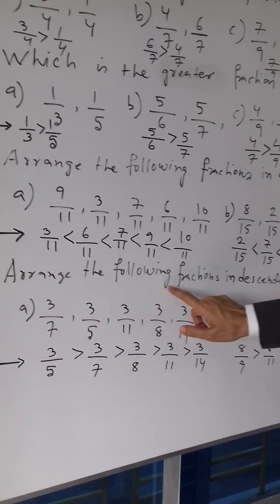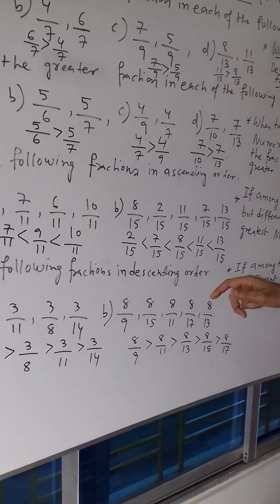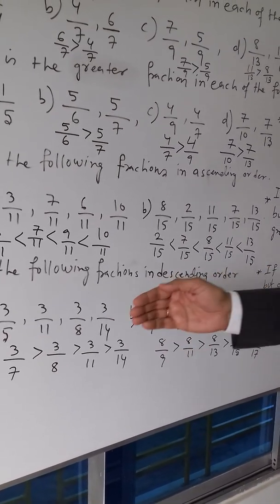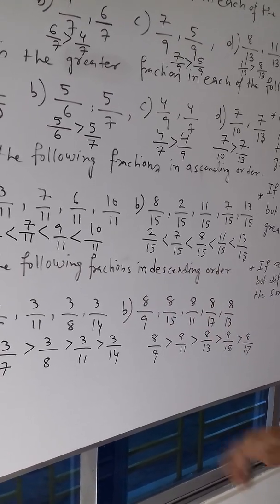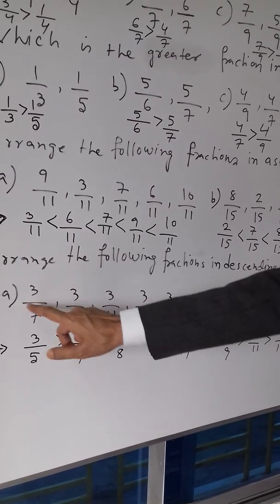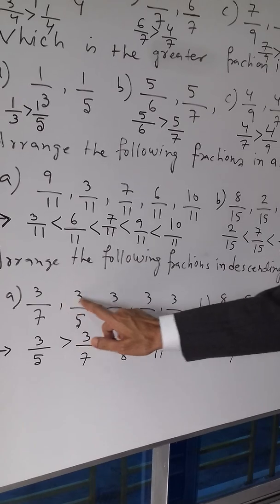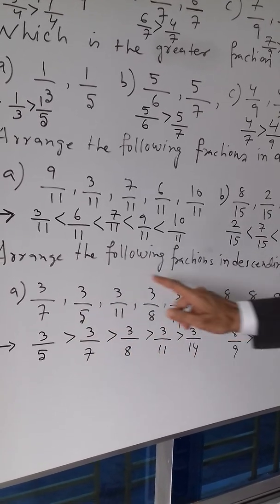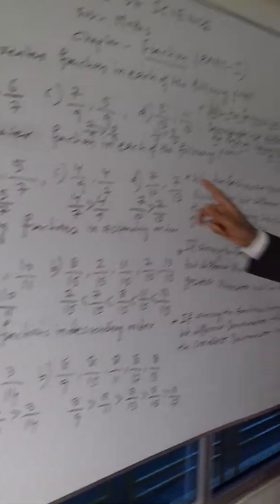Arrange the following fractions in descending order — descending order means you start from the greatest. Here you see: 3 by 7, 3 by 5. All the fractions have the same numerator but different denominators, so you should take into account rule 2.